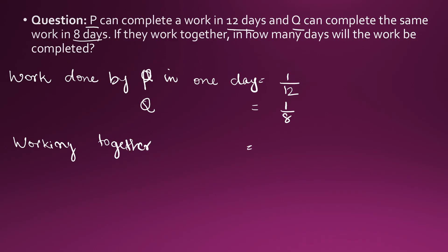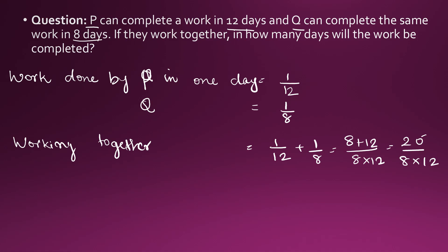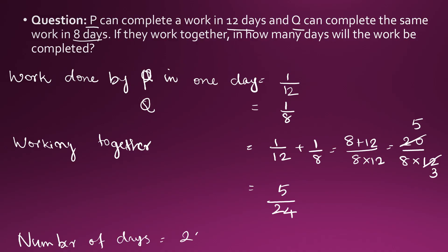The work completed per day will be 1 by 12 plus 1 by 8, which is equal to 8 plus 12 divided by 8 into 12. This is 20 divided by 96, which simplifies to 5 by 24. This is the work done per day. So the number of days to complete the work will be the reciprocal, that is 24 by 5, which is 4.8 days.